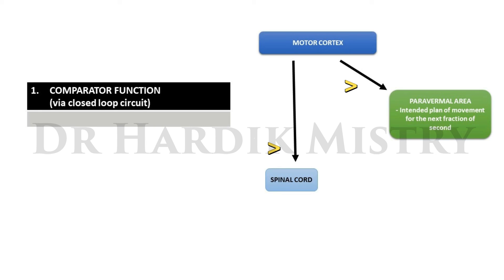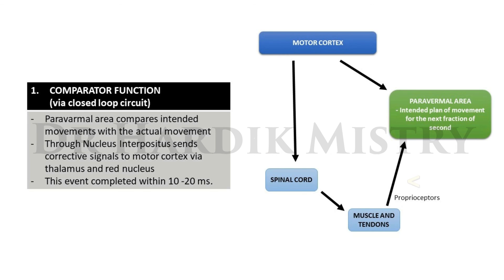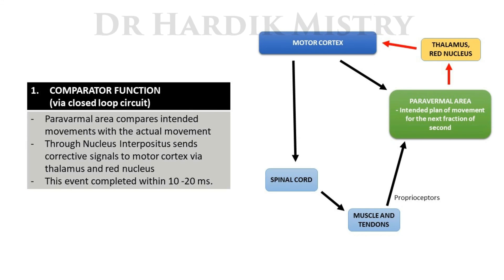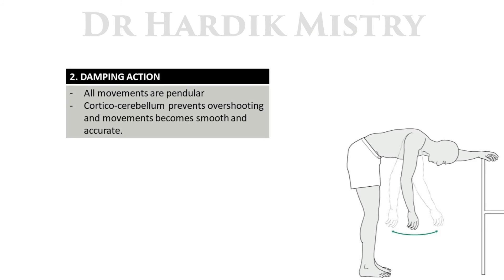When the motor cortex sends impulses via the corticospinal tract, it also sends a message to the paravermal area of the cerebellum about the sequential intended plan of movement for the next fraction of a second. The cerebellum simultaneously receives feedback from proprioceptors of muscles, tendons, and joints about actual movement occurring. The paravermal area compares intended with actual movement and sends corrective signals to the motor cortex through the thalamus and red nucleus — this is completed within 10 to 20 milliseconds.